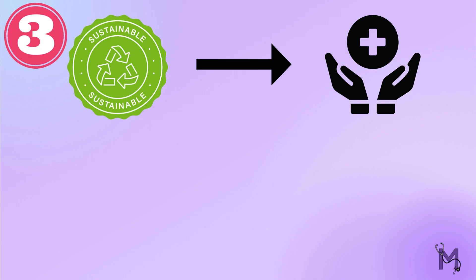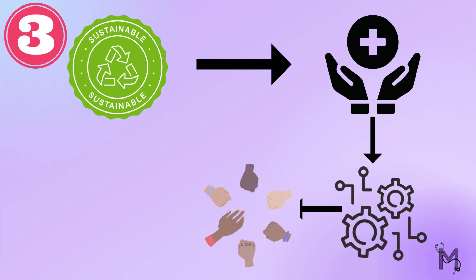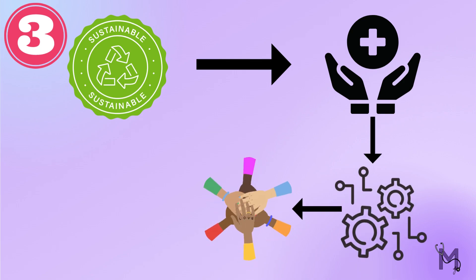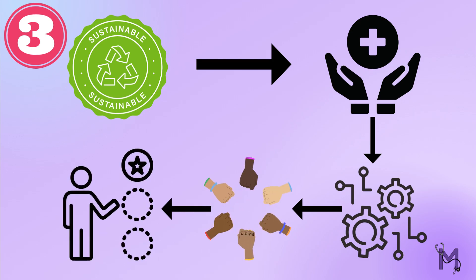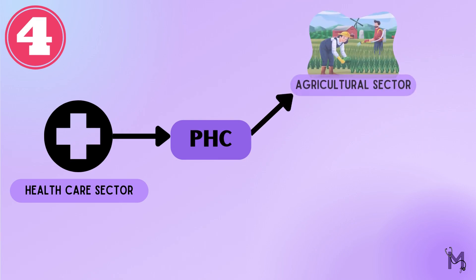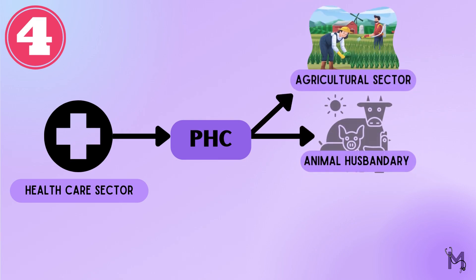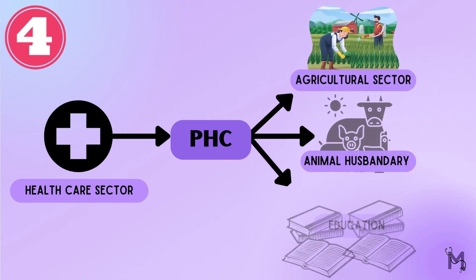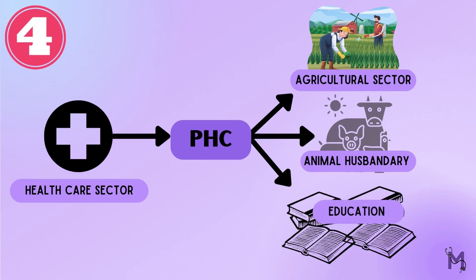The third characteristic is sustaining these services. They should be sustained by an integrated, functional system which is mutually supportive, to ensure prioritizing those who are most in need. Lastly, other than the healthcare sector, there are several other sectors like agriculture, animal husbandry, and education. Coordinated efforts of all these sectors are necessary to deliver primary health care, which we will discuss in more detail in the principles.